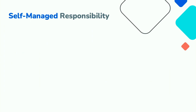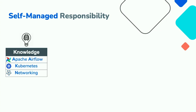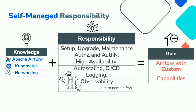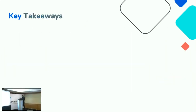ArgoCD and Helm charts can help with end-to-end observability. Now, operating this on a day-to-day basis, you need to be aware of your responsibilities: you have to manage Apache Airflow, Kubernetes networking, authentication, authorization, upgrades, high availability, observability, logging, and more. If you do all of this, you get the benefits of running a custom Apache Airflow solution tailored to your own requirements.